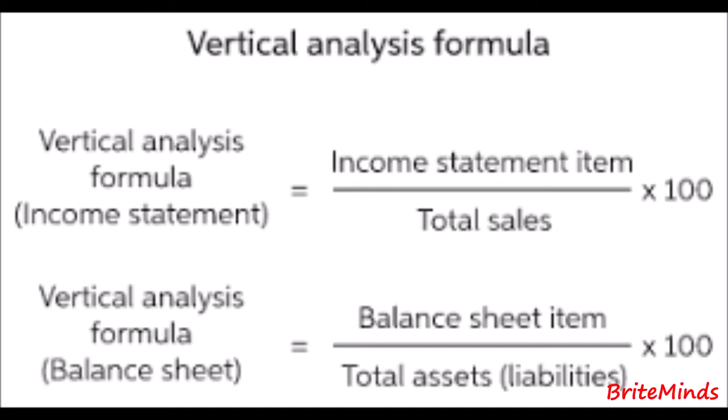Common size financial statements show only percentages and no absolute peso or dollar amounts. The common size statement of comprehensive income reports revenue and expense amounts as a percentage of sales or net sales, while the common size statement of financial position reports each asset, liability, and owner's equity amount as a percentage of total assets. So the base amount for the income statement is net sales, and for the statement of financial position it is total assets.